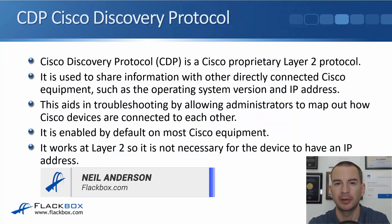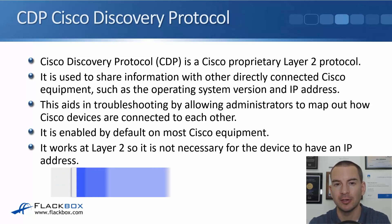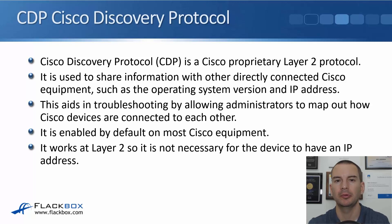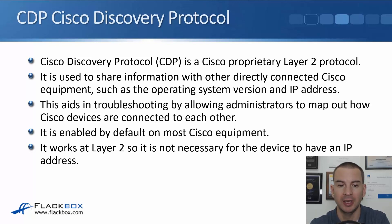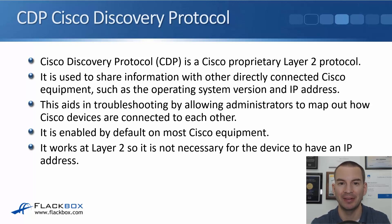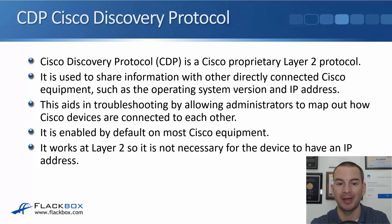In this lecture, you'll learn about Cisco Discovery Protocol, CDP, and the Link Layer Discovery Protocol, LLDP. They're both very similar protocols. CDP is a Cisco proprietary Layer 2 protocol used to share information with other directly connected Cisco equipment, such as the operating system and IP address. That information aids in troubleshooting by allowing administrators to map out how Cisco devices are connected to each other.